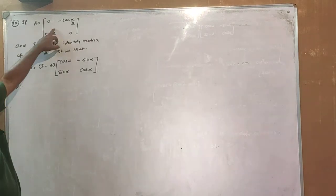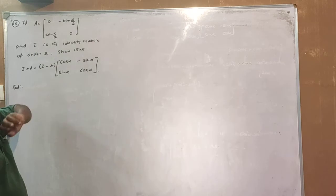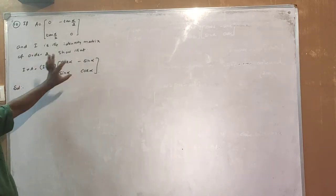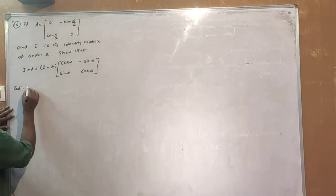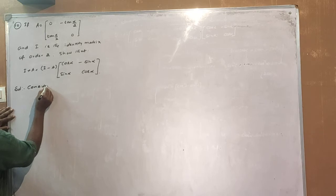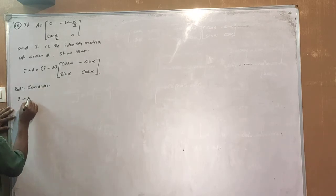Matrix A is supported. The identity matrix I is present. I plus A is equal to I minus A into this matrix. Consider I plus A.